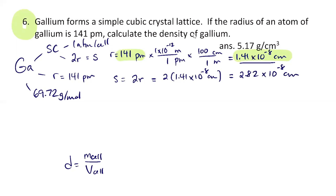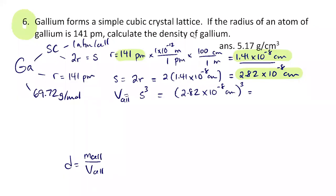We find s = 2.82×10⁻⁸ centimeters. Now that we know s, from basic geometry the volume of the cell is s³ — volume of a cube is s×s×s — so (2.82×10⁻⁸ cm)³. Notice the importance of keeping units in as you go; if you leave them out you might end up in cubic picometers without realizing it. The result is 2.24×10⁻²³ cubic centimeters.